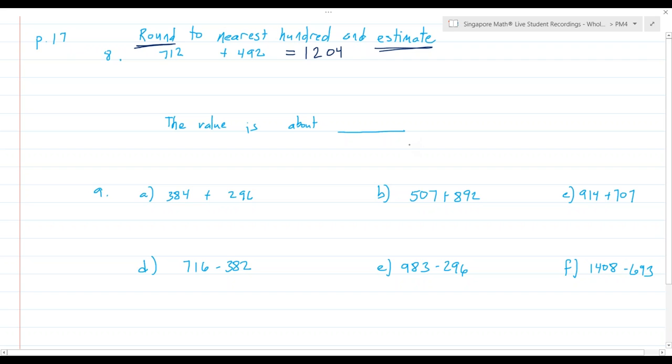But sometimes we want to round and estimate. It's important to know how you're going to round. In this case, you're going to round to the nearest hundred. So 712 rounds to 700, 492 rounds to 500. And when you add 700 and 500, we have 1200. The value is about 1200.